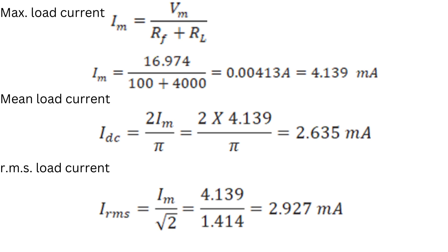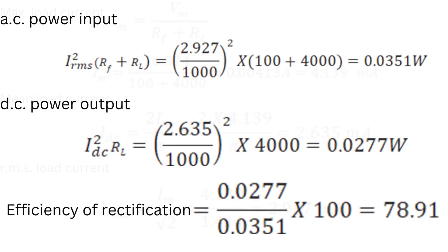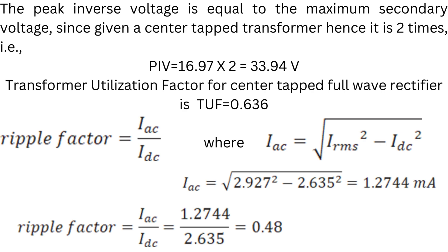The RMS value of load current Irms = Im / √2 = 4.139 / 1.414 = 2.827 milli amperes. AC power input = Irms² × (Rf + RL) = (2.827×10⁻³)² × (100 + 4000) = 0.0351 watts. DC power output = Idc² × RL = (2.635×10⁻³)² × 4000 = 0.0277 watts. Rectifier efficiency = output / input power = 78.91%.